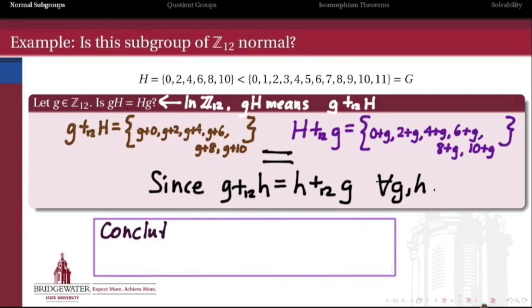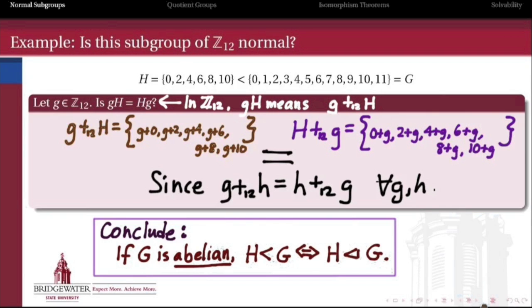That generalizes to the statement that we can conclude that any abelian group, any group in which the operation is commutative, every one of its subgroups is a normal subgroup. So normal is really only an interesting concept in groups that aren't abelian, because in an abelian group, normal subgroups are the same as subgroups.